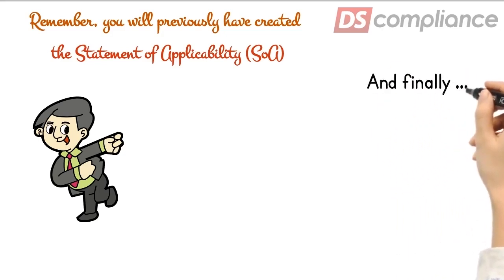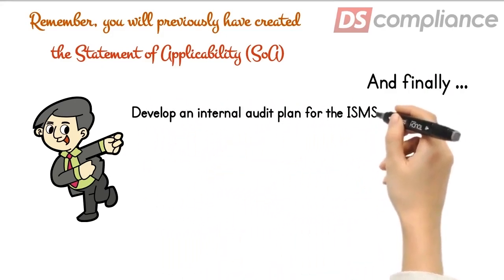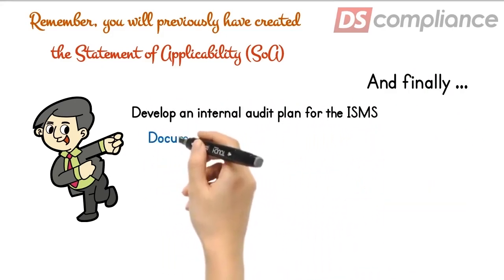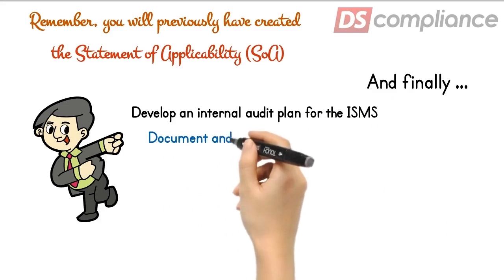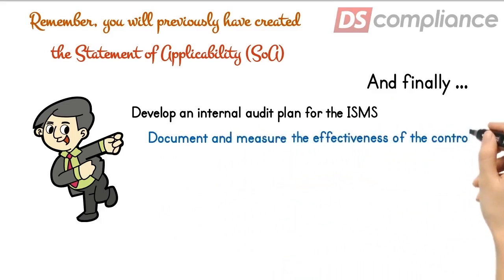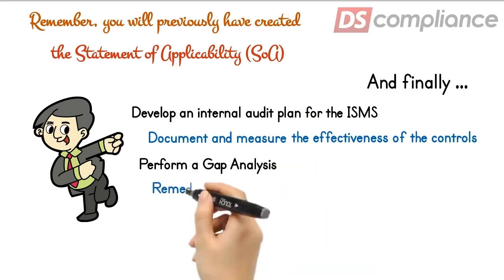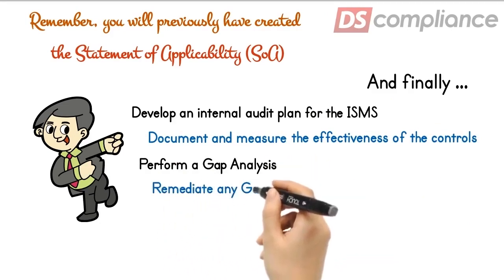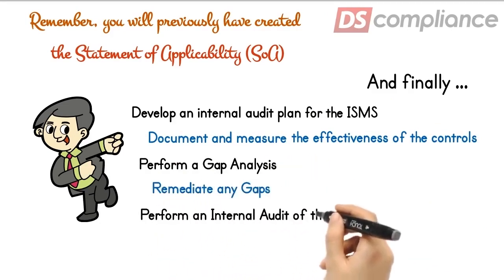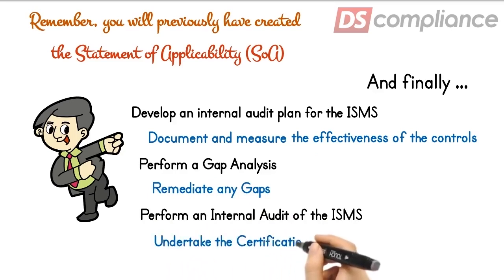And now finally, the remaining steps. Develop an internal audit plan for the ISMS. Document and measure the effectiveness of the controls. Then perform a gap analysis and remediate any findings. Then optionally, perform a full internal audit before proceeding to the certification audit.